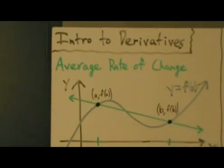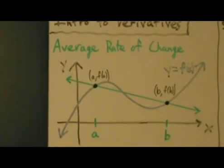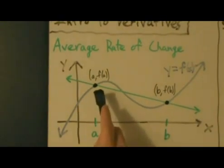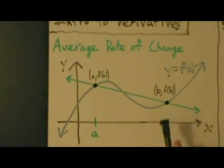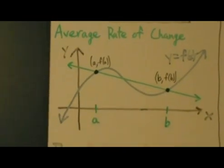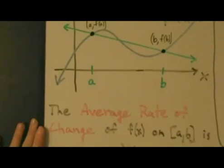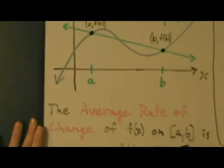So here we have our function, y equals f of x. We have a graph like this. Here's x equals a, x equals b. This is the point a, f of a. Here's b, f of b. And this green line here, we'll talk about that in a second. But anyway, the average rate of change of f of x on the interval, the closed interval a to b,